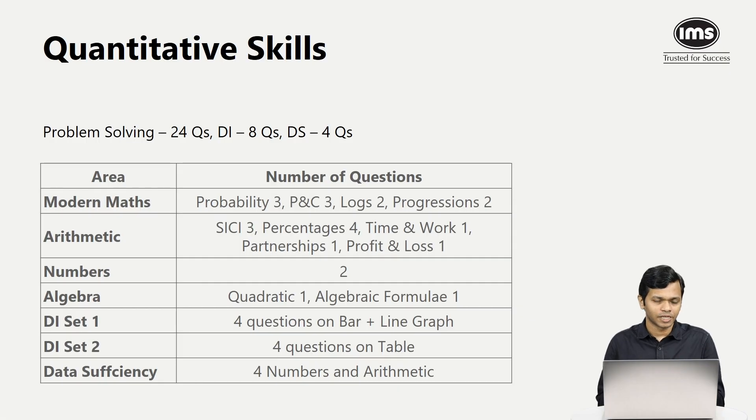Now let's start with the individual sections. I'm going to start with quant. In quant, there were 24 questions on problem solving, eight questions from data interpretation, and four questions from data sufficiency.